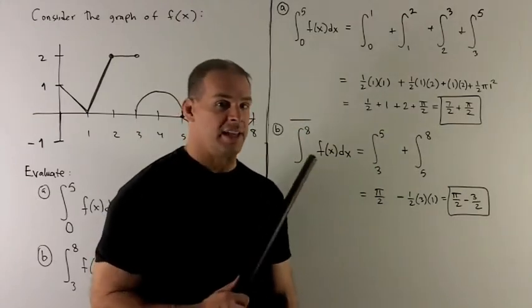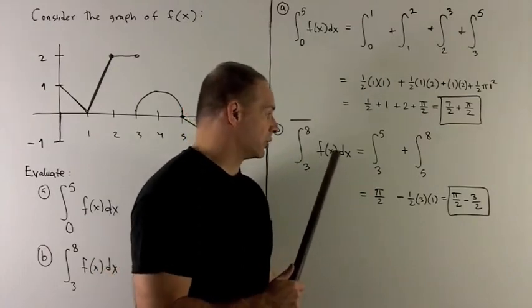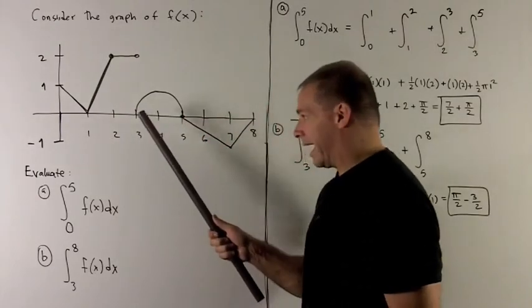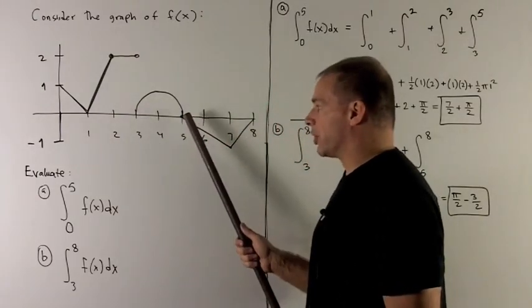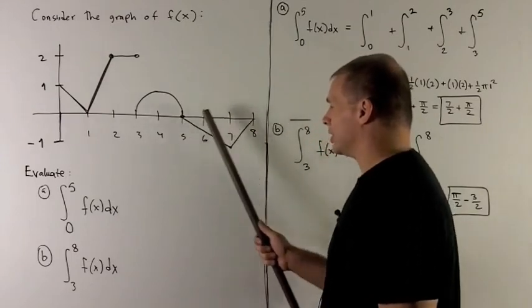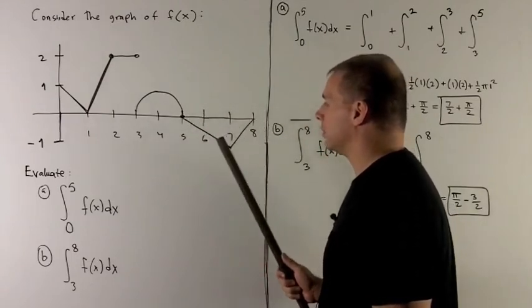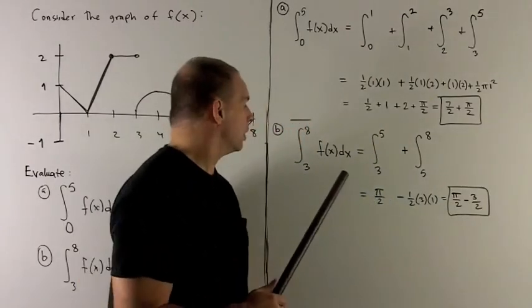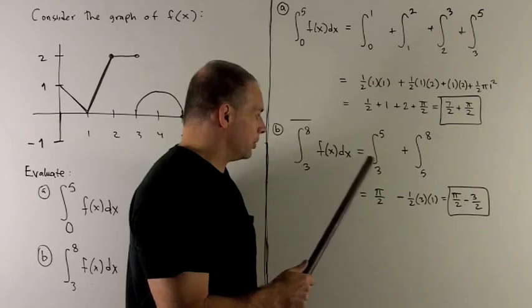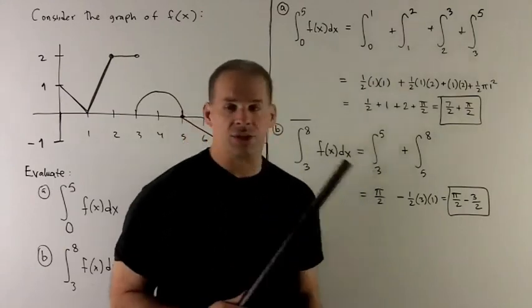For the second definite integral, we're going to do the same thing, but we have a little twist. We have the semicircle from the first part, but now I also have a triangle which lives under the graph.